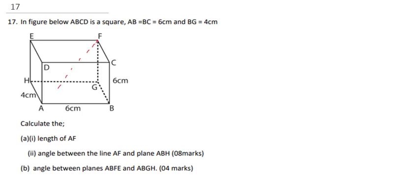To find AF, I need to first look for AG. Notice that the angle at that point will not be 90 degrees, so I can use Pythagoras' theorem to solve for AF. Bringing out the diagram, to find AG: notice that AB is 6 and BG is 4, so I need to find AG first.